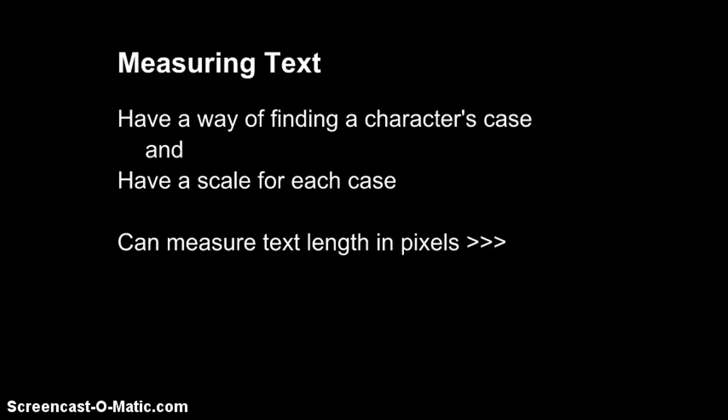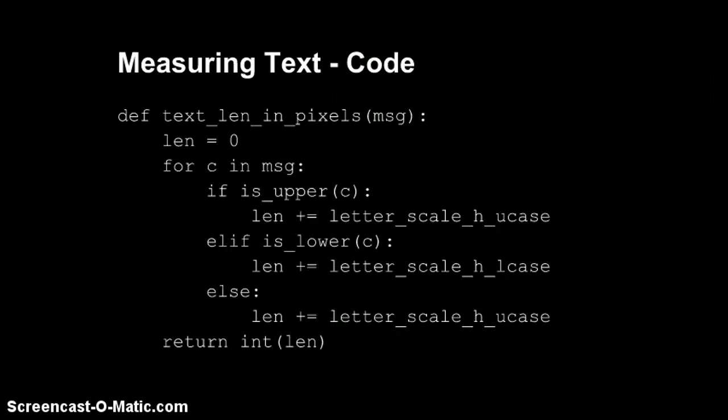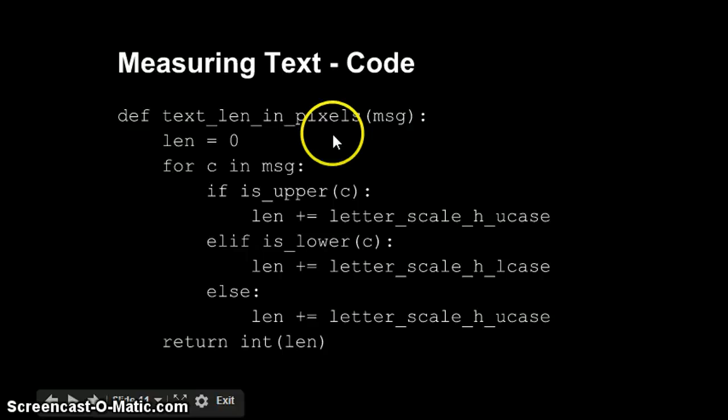So we now have enough to be able to measure a string. We have a way of finding a letter's case, and we have a scale for each case. So all we need to do is apply it. And the code to do that—you'll recall what I said at the beginning: we need to loop through all the characters in the string, determine its width, and get a total for that width. So this is the code that does that: text_in_pixels.